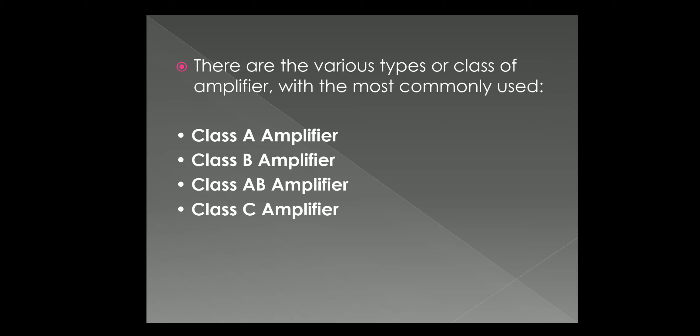The next one is Class B amplifier. It is twice as efficient as Class A amplifier with a maximum efficiency of 70% because the amplifier device only conducts half of the input signal.